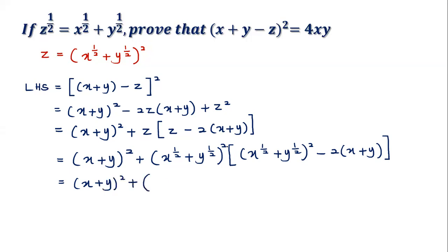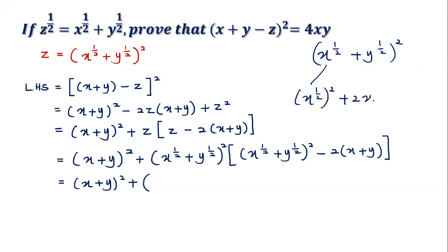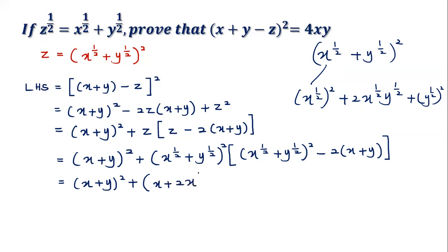Now I'll expand (x^(1/2) + y^(1/2))². Squaring this gives: x^(1/2) squared, plus 2·x^(1/2)·y^(1/2), plus y^(1/2) squared. Since squaring a square root cancels out, x^(1/2) squared equals x, and y^(1/2) squared equals y. So the expansion gives x plus 2x^(1/2)·y^(1/2) plus y.